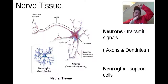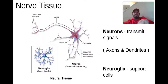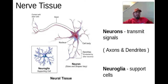Now, nervous tissue — while it's really complex and the way it works can be very complicated, which we'll talk about more when we get to our nervous system — in terms of the tissue itself, it's pretty straightforward. We have two types of cells that make up nervous tissue.